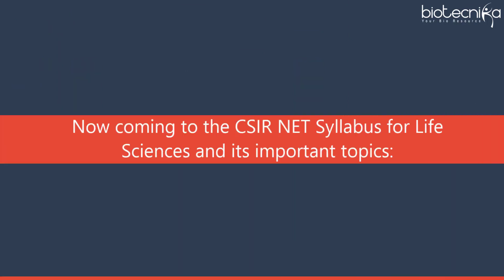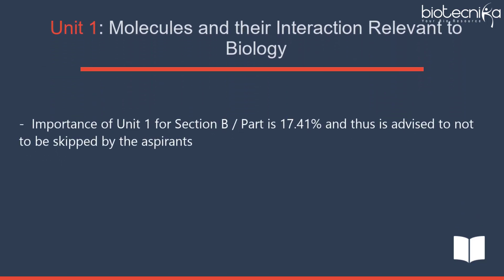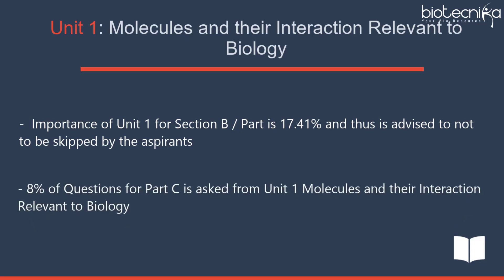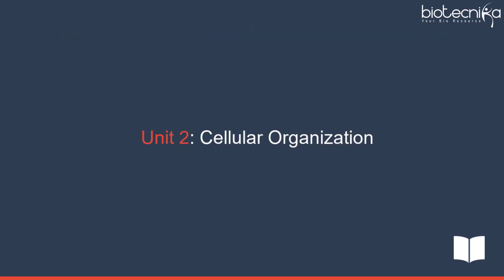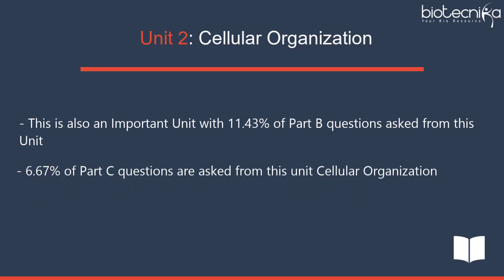Now coming to the CSIRNET syllabus for Life Sciences and its important topics. Unit 1 – Molecules and Their Interaction Relevant to Biology has an importance of 17.41% for Part B and is advised not to be skipped. 8% of Part C questions are asked from Unit 1. Unit 2 – Cellular Organization is also an important unit, with 11.43% of Part B questions and 6.67% of Part C questions from this unit.